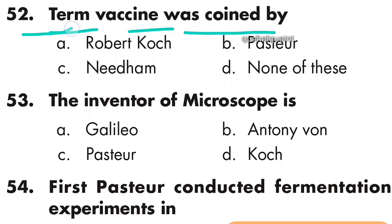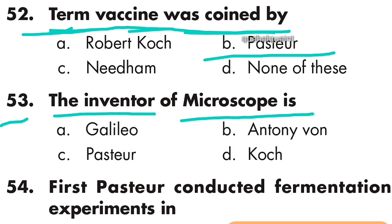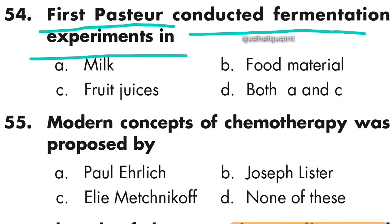Question number 52: The term 'vaccine' was coined by Edward Jenner. Option B is right. Question number 53: The inventor of the microscope is Antony van Leeuwenhoek. Option B is right — Antony van Leeuwenhoek.